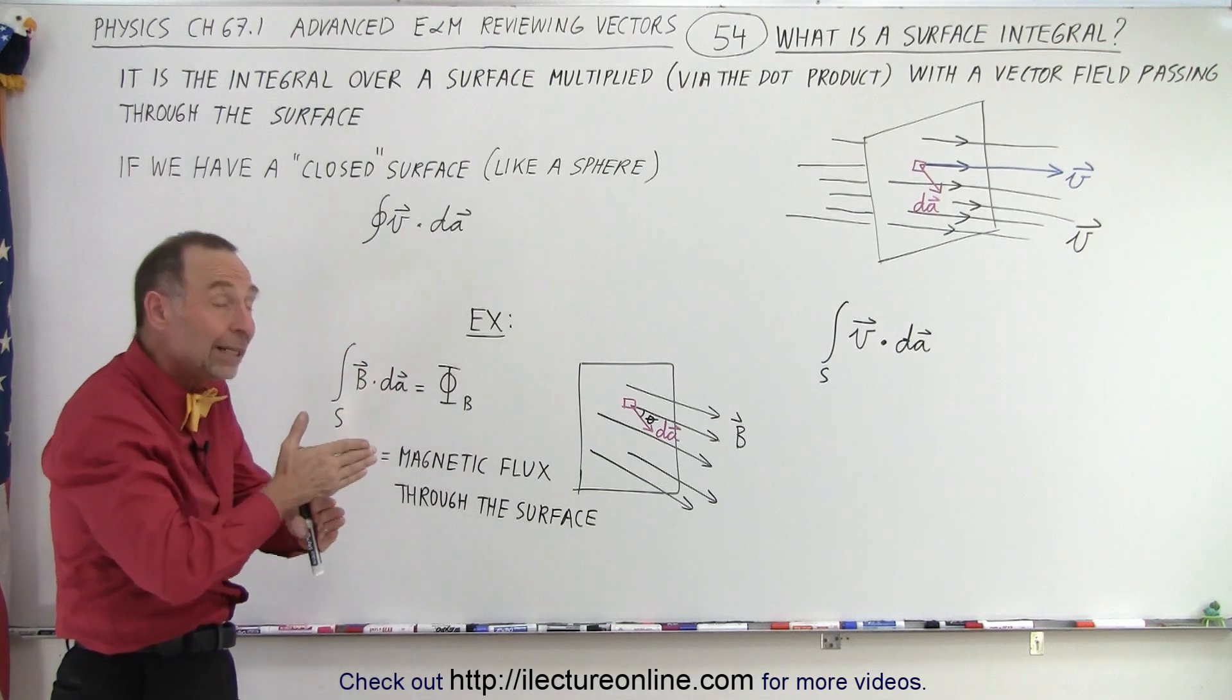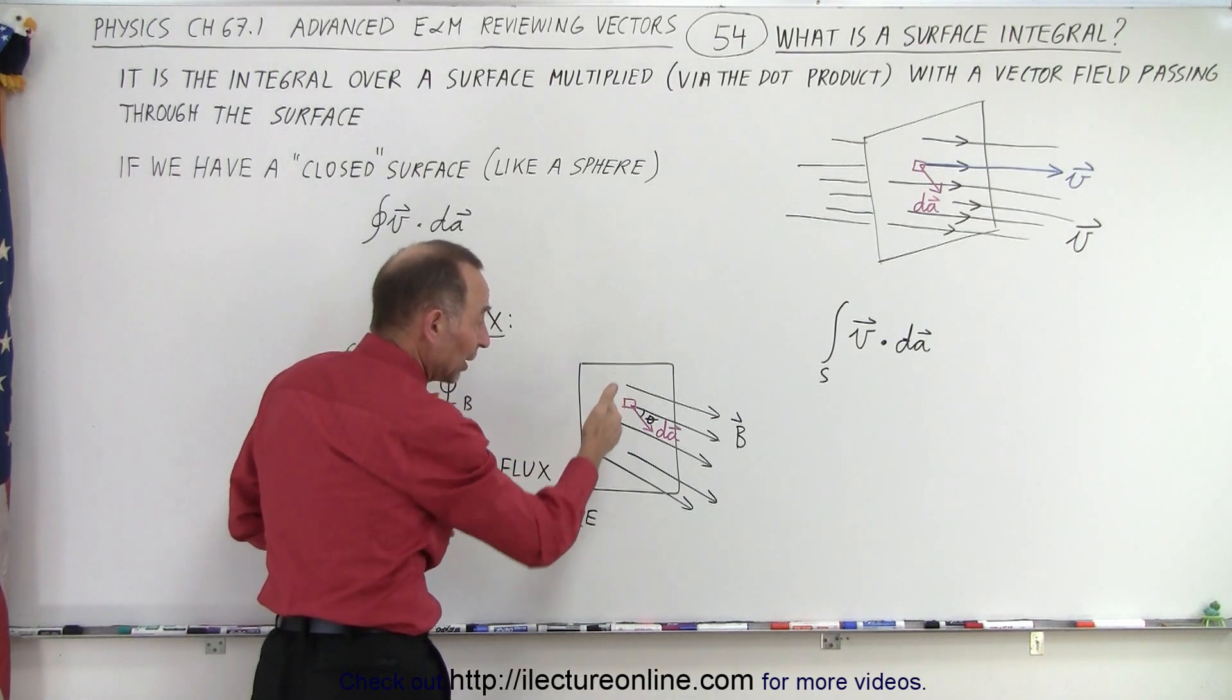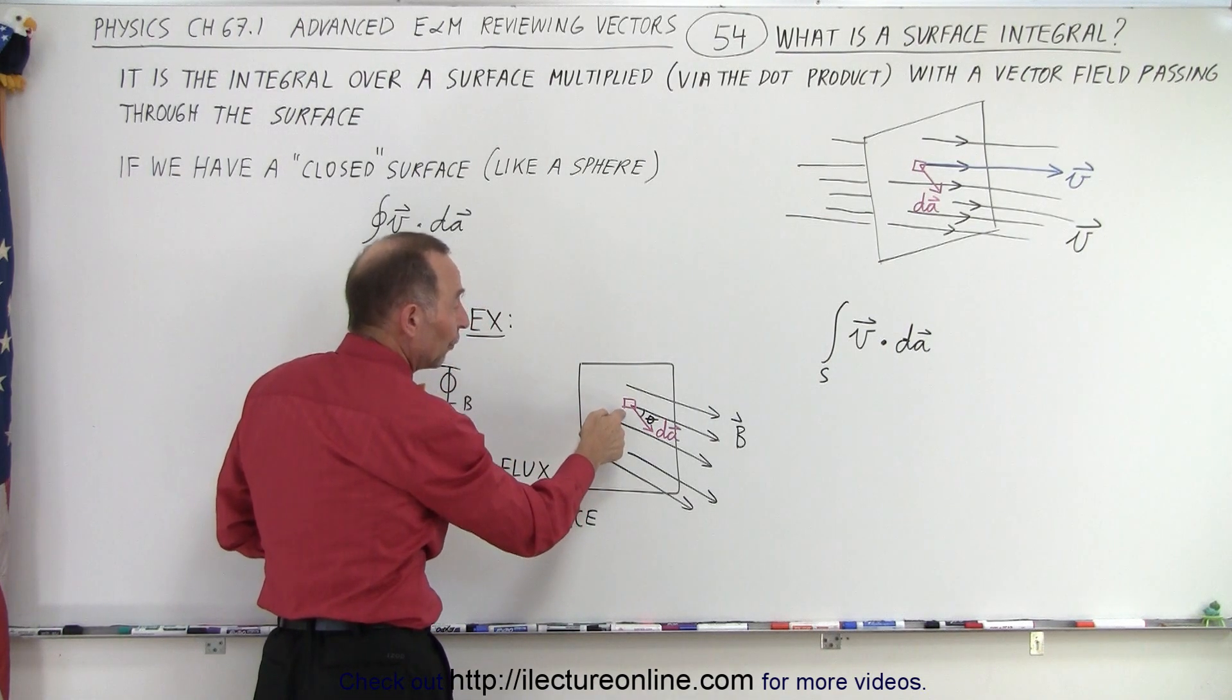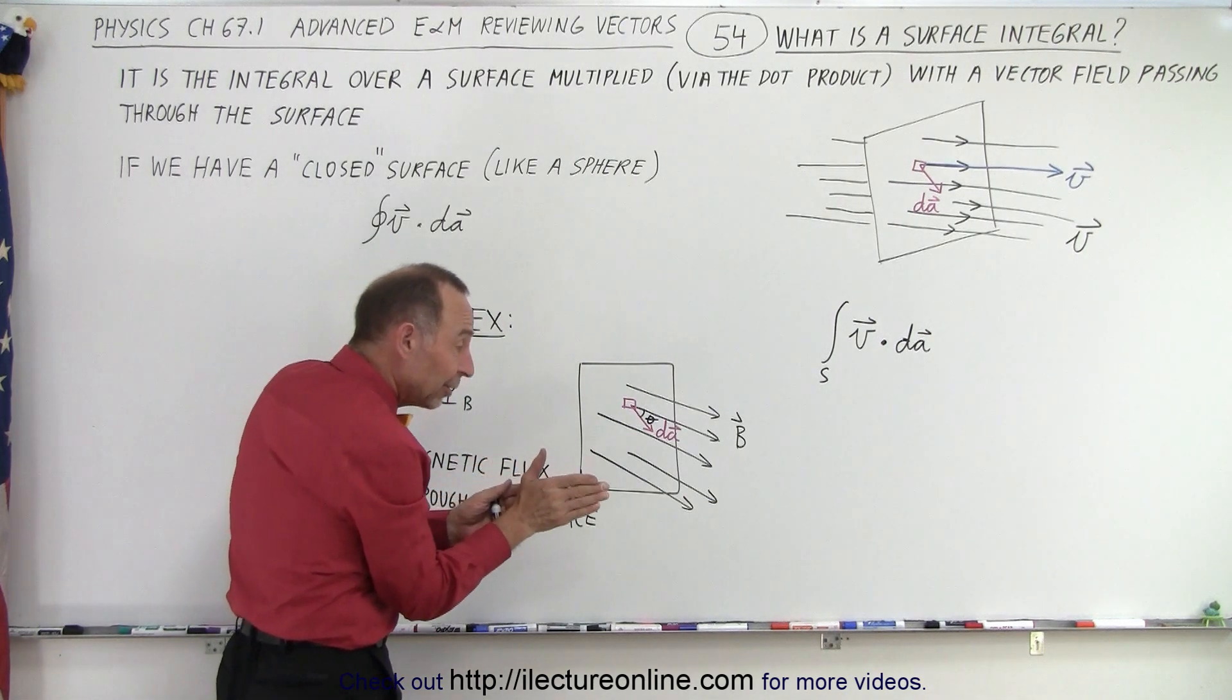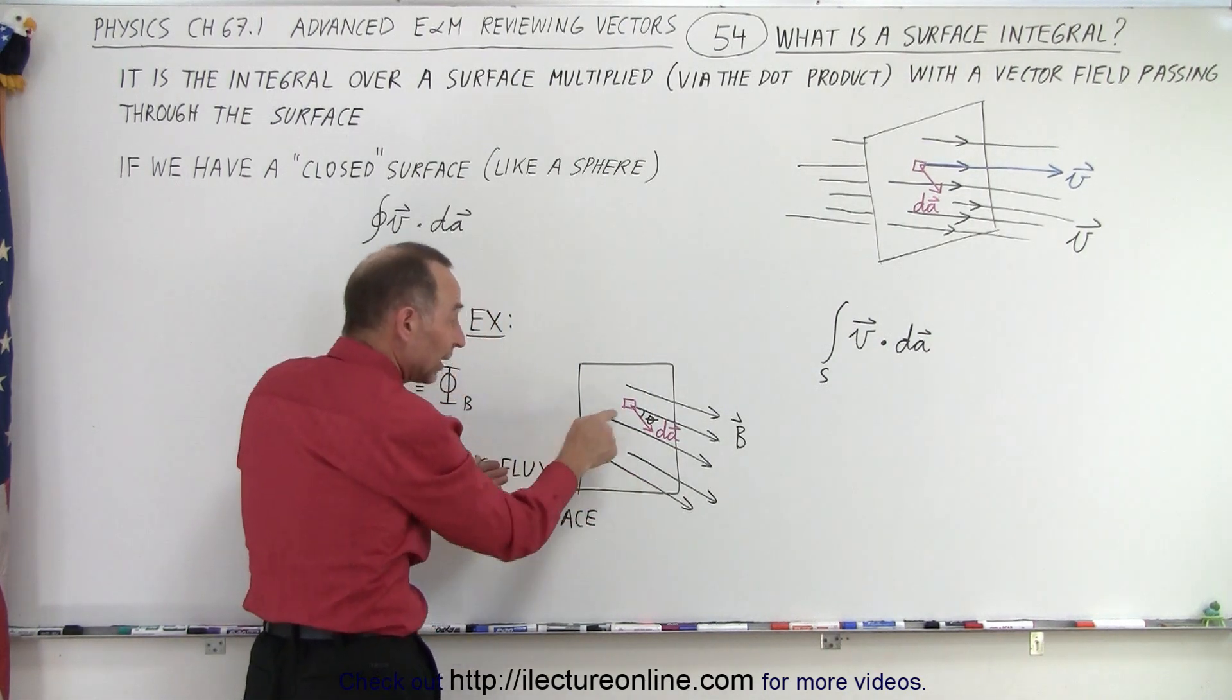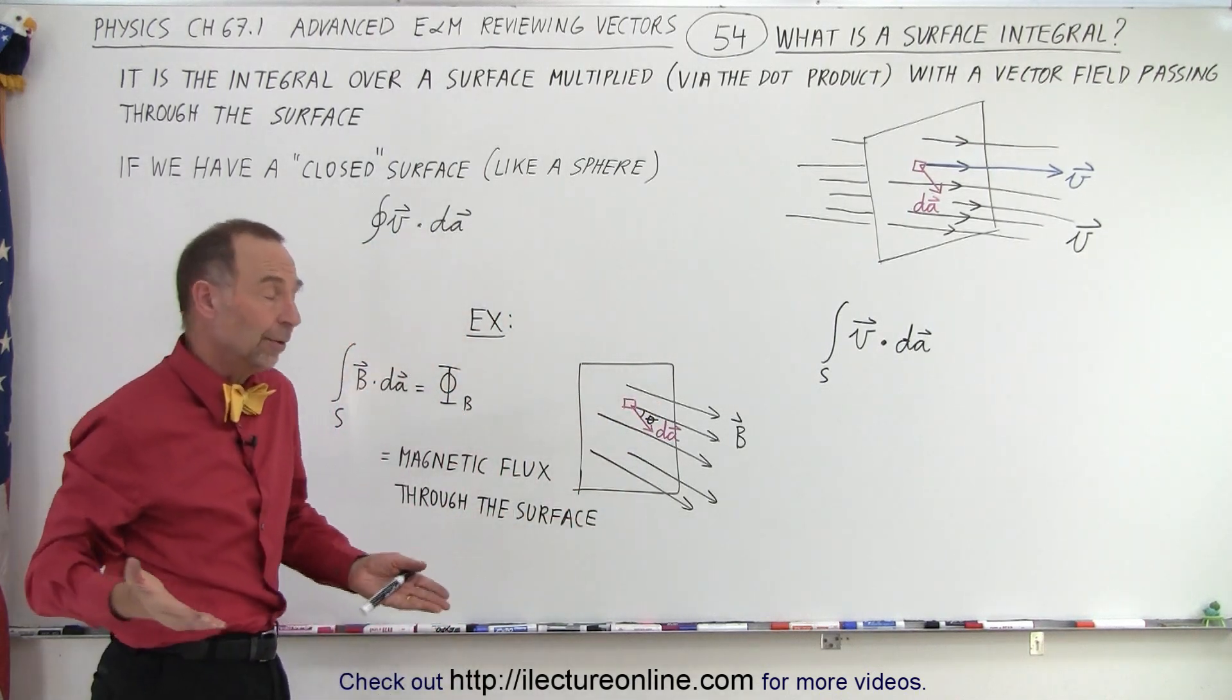Notice that if the magnetic field is completely perpendicular to the surface, then of course we have the maximum flux. If the magnetic field turns away from the perpendicular direction and eventually becomes parallel to the surface, then the flux is zero.